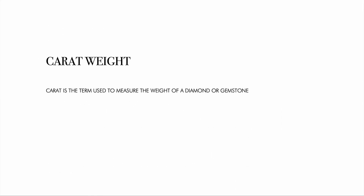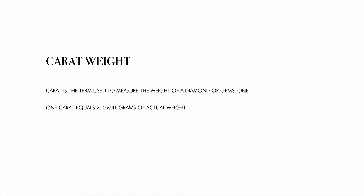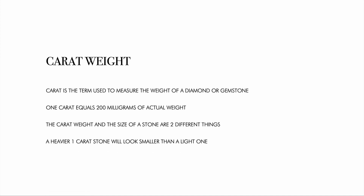Carat weight. Carat is the term used to measure the overall weight of a diamond or gemstone. One carat equals 200 milligrams of actual weight. The carat weight and the size of a stone are two different things. A one carat diamond will look drastically different in size than a one carat opal, because each gemstone has a different density. A heavier one carat stone will look smaller than a lighter one.